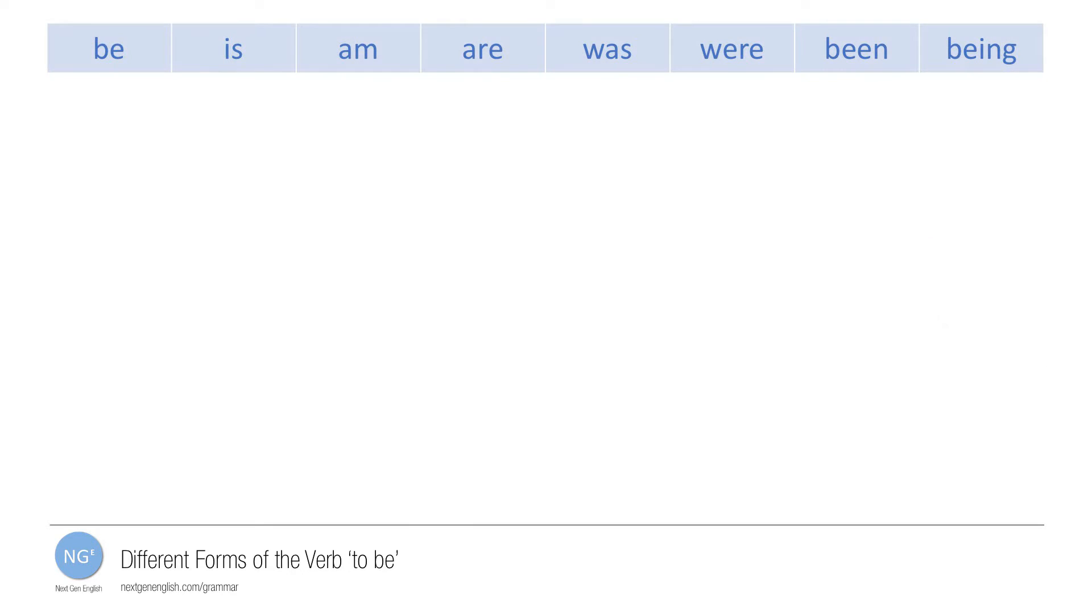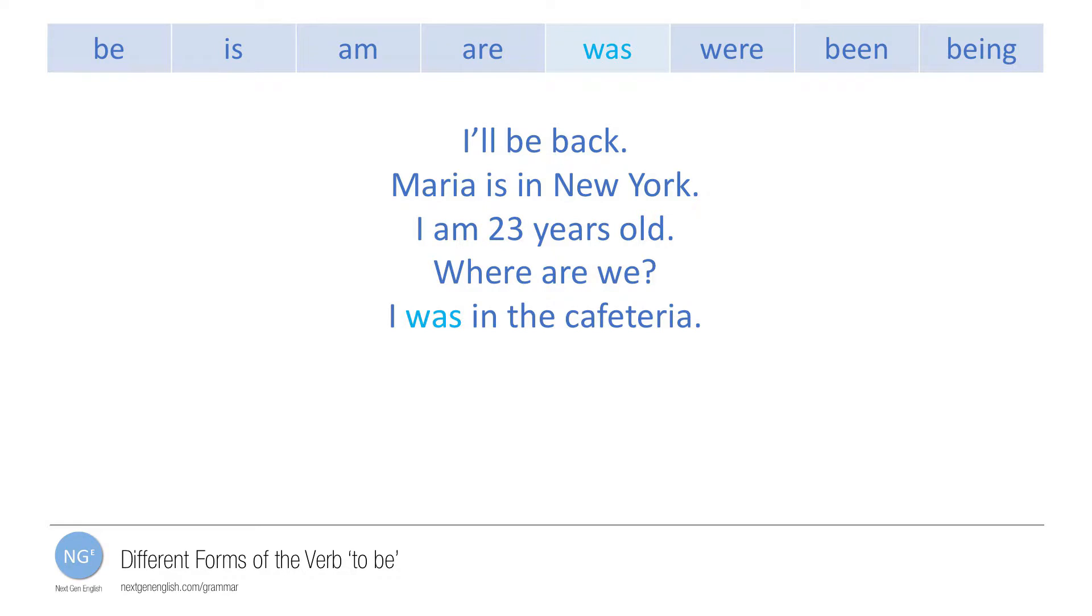For example: I'll be back. Maria is in New York. I am 23 years old. Where are we? I was in the cafeteria. Those were the days. I've been to Turkey. Stop being so annoying.